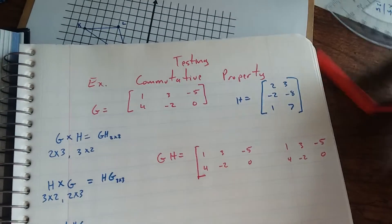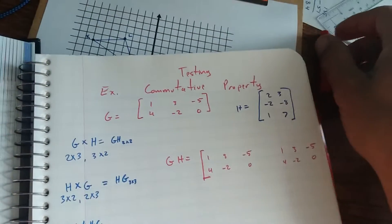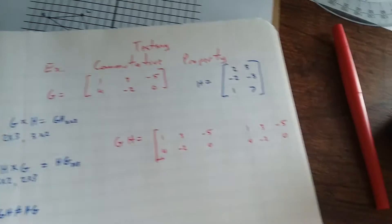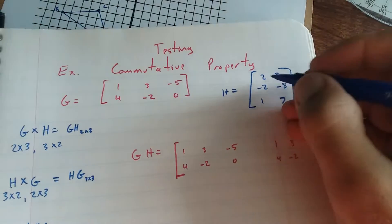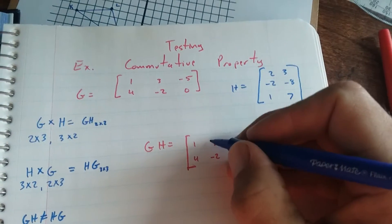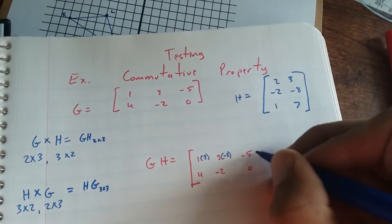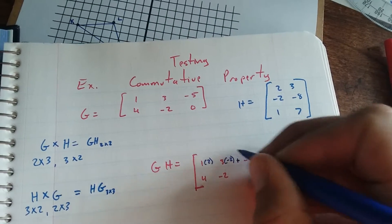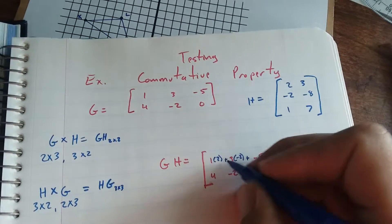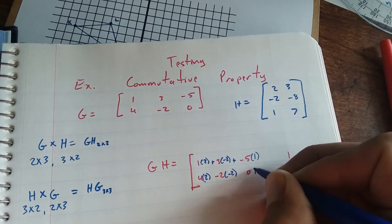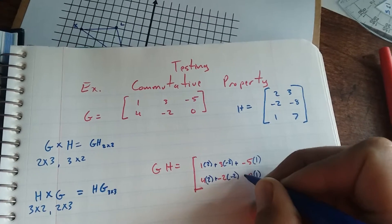So I write my entries from the first matrix like that. And then from the other matrix, it's always first column here. So it's going to be times 2, negative 2, and 1. And you add all of those together.